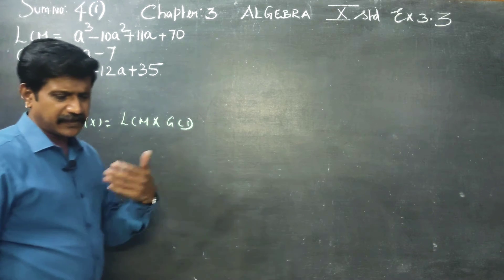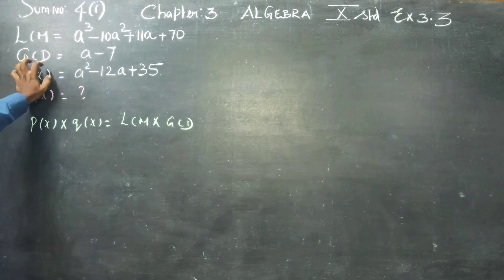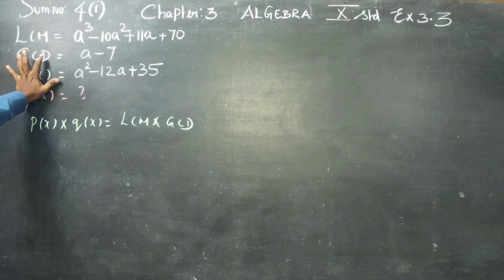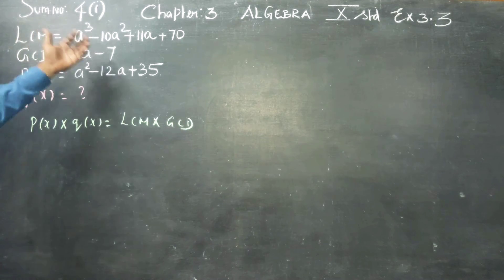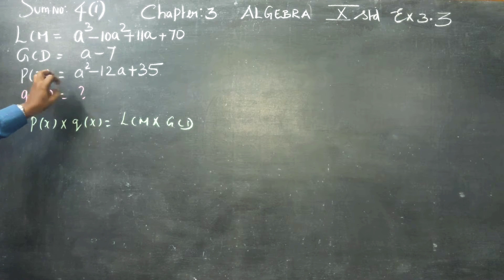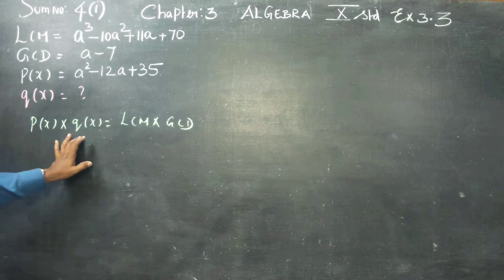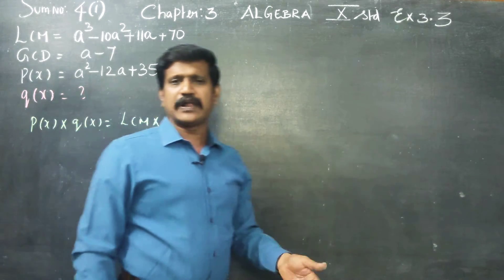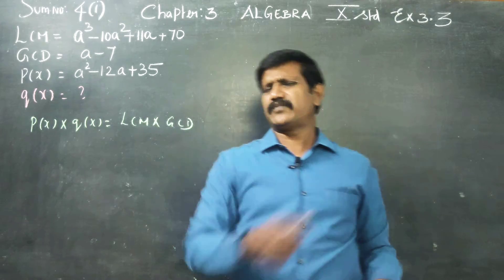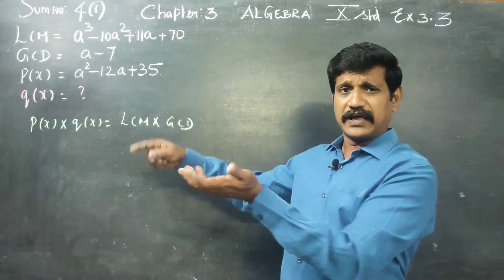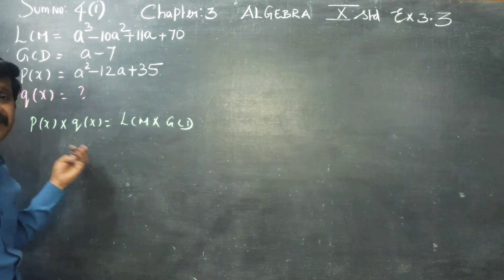Again, I repeat — it's just a name. Don't take it very seriously; it's a polynomial, that's all. It's just a name. P of A is equal to P of X into Q of X — it's a polynomial name, that's all.